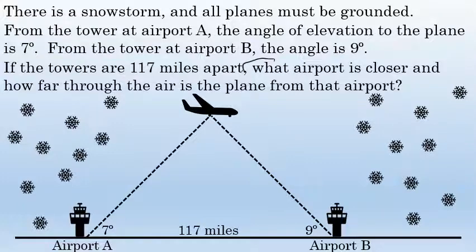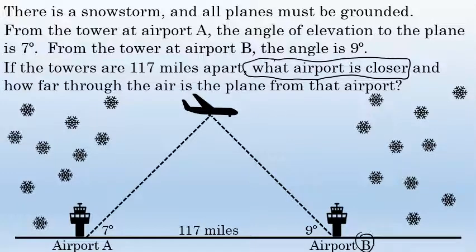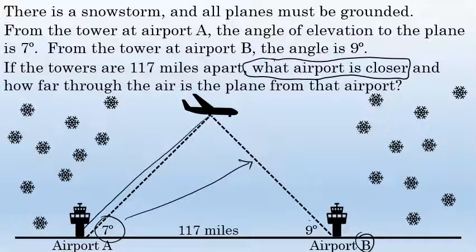First, let's consider what airport is closest. This situation can be modeled as a triangle shown on the screen. The airplane's distance to Airport B is opposite the 7-degree angle, and the distance to Airport A is opposite the 9-degree angle. In any triangle, a smaller side is across from a smaller angle.